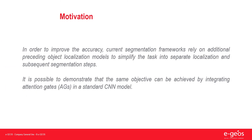In order to improve accuracy, current segmentation frameworks rely on additional preceding object localization models to simplify the task, separating it into localization and subsequent segmentation. It's possible to demonstrate that the same objective can be achieved by integrating attention gates in a standard CNN model.